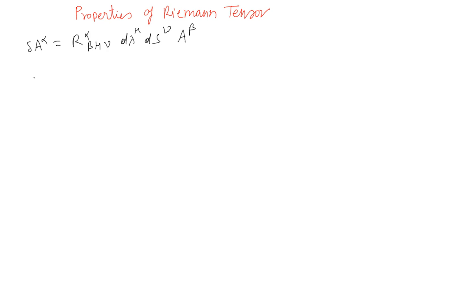First of all, the foremost property is that you can always use metric to raise and lower indices. So if you multiply this, g beta sigma will give you R alpha sigma mu nu.